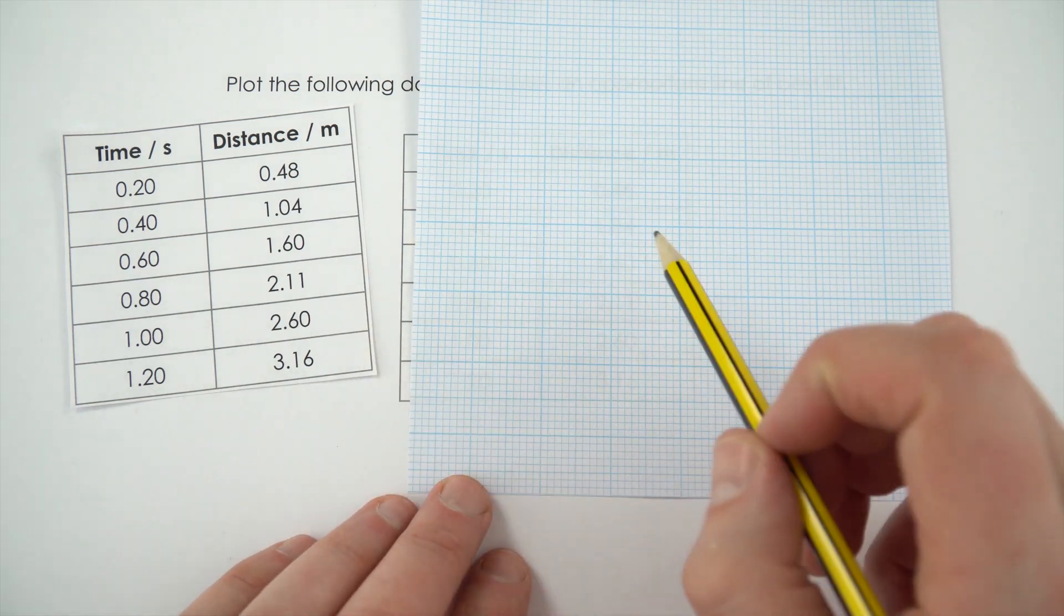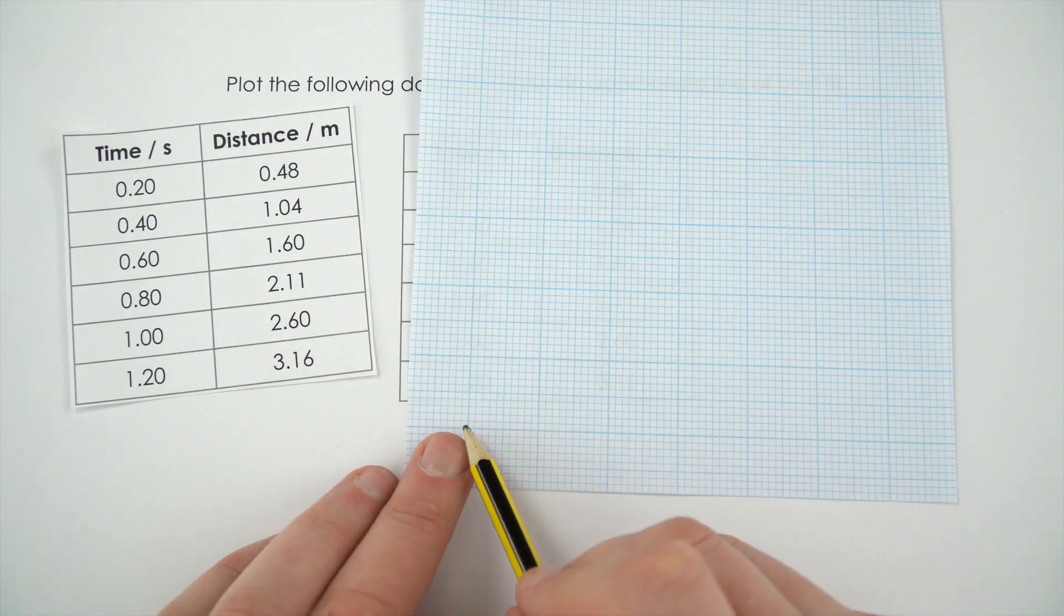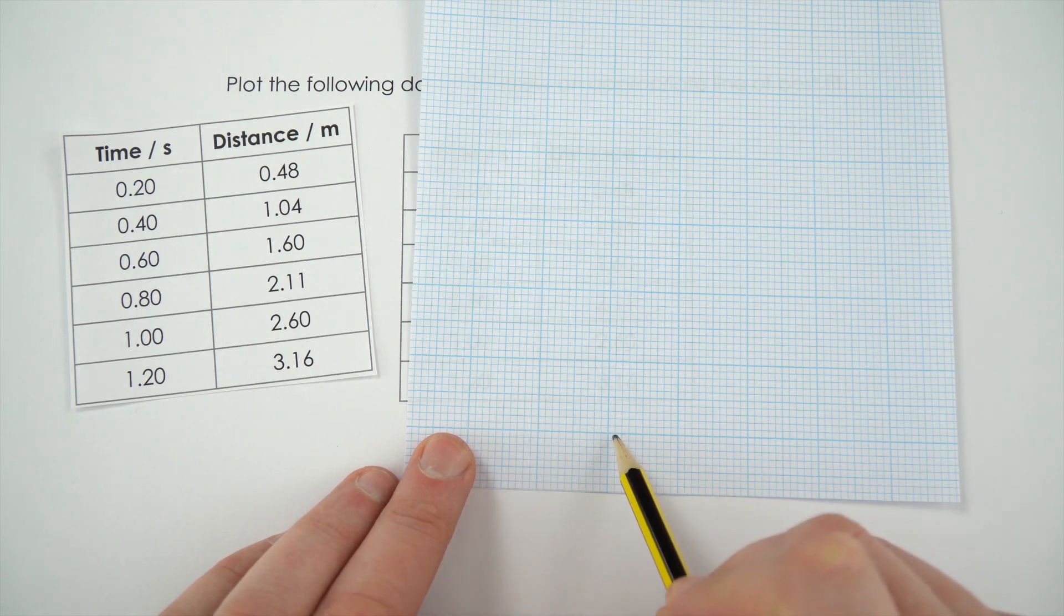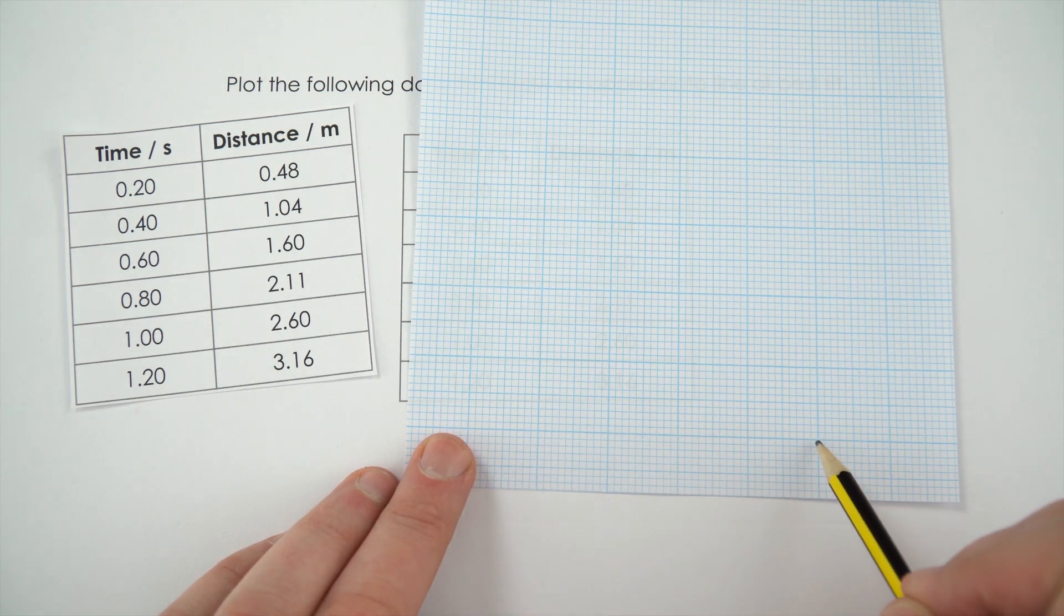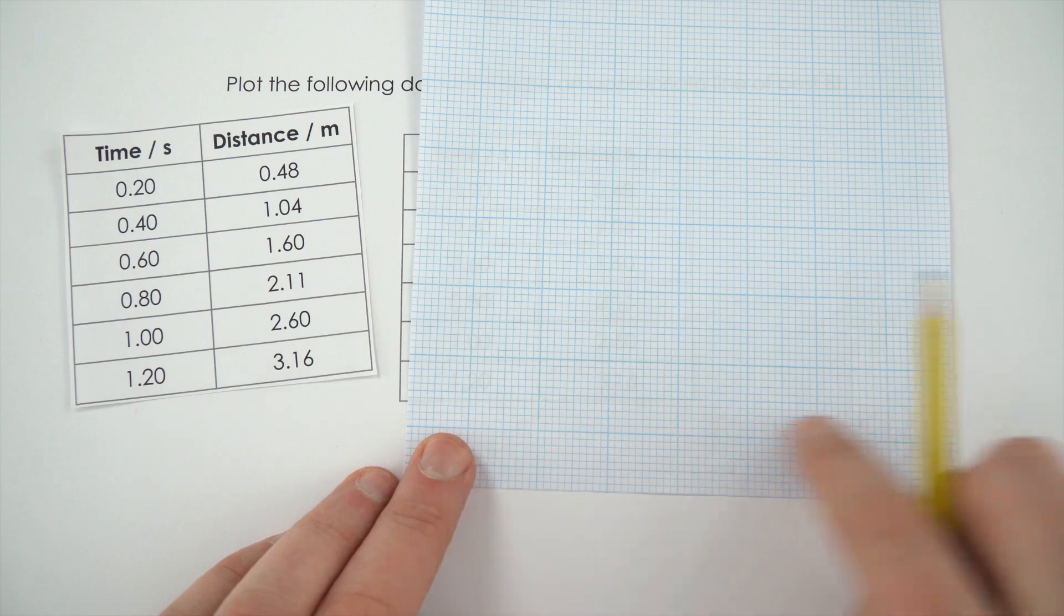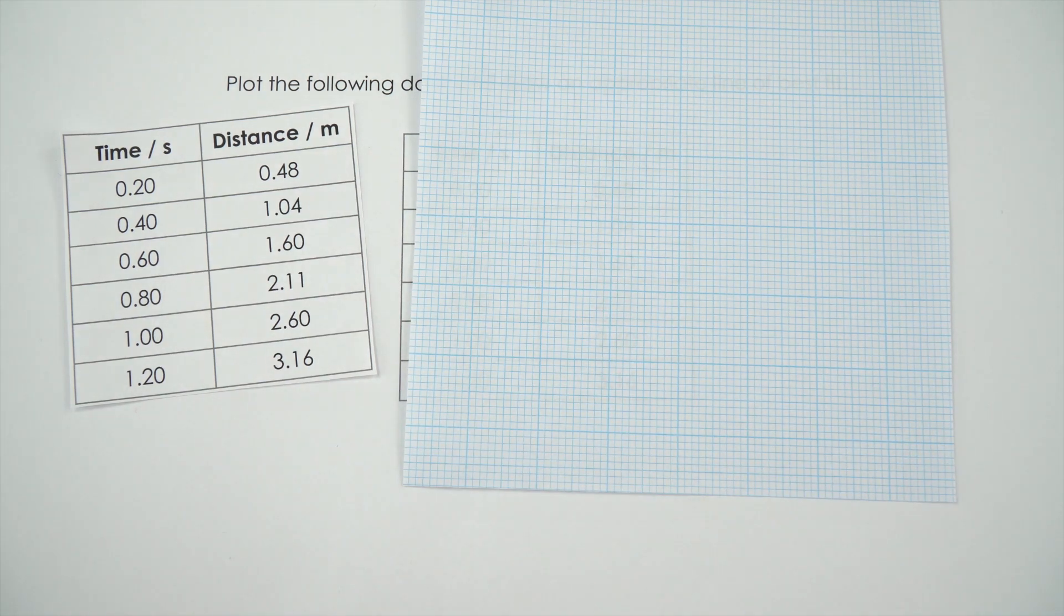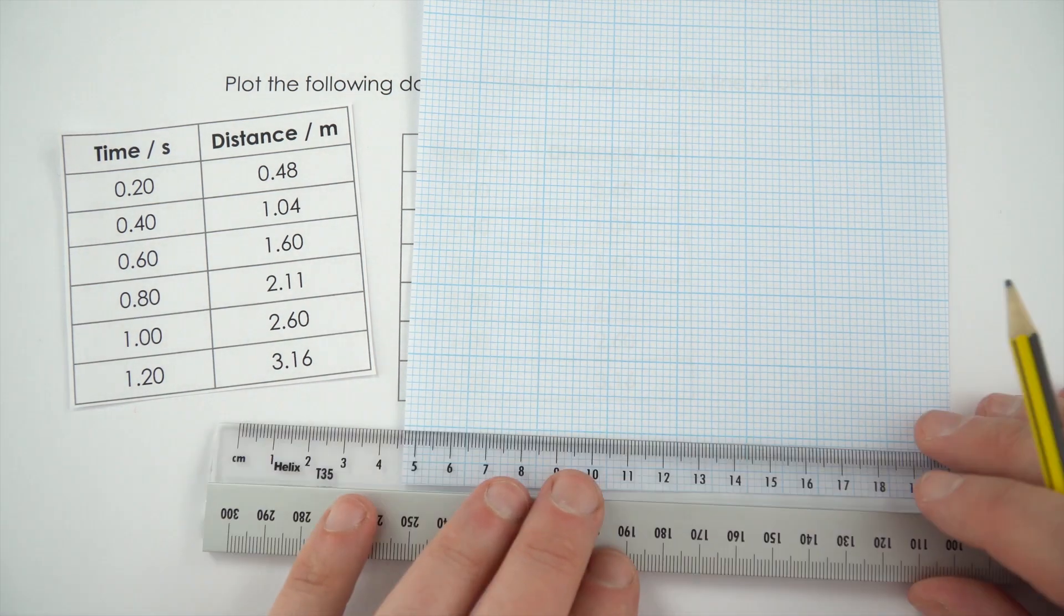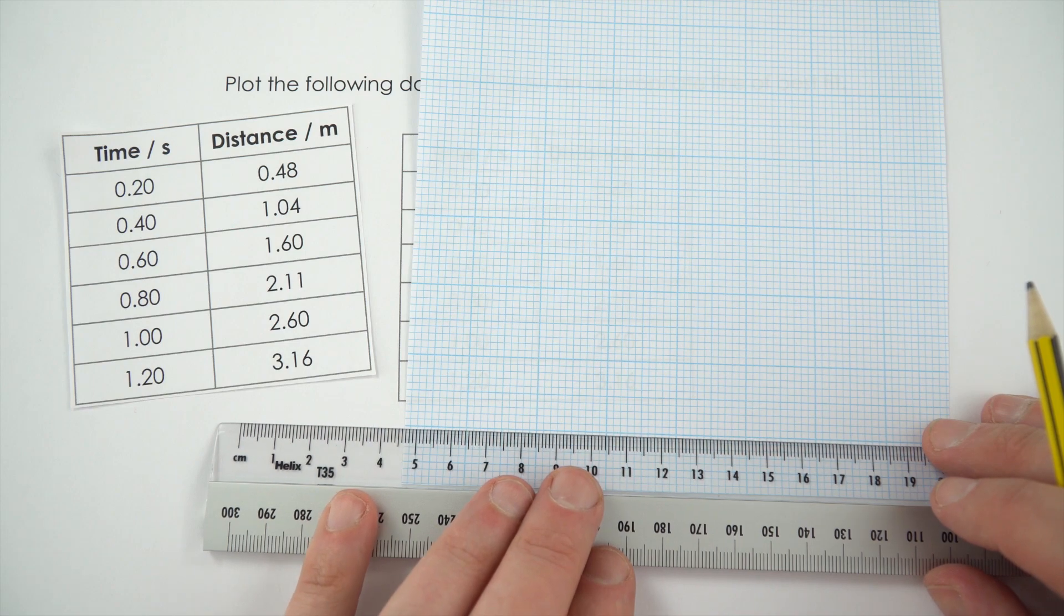Before I actually draw the line, I'm just going to work out how this fits in. So if I start at 0, if I went 0.2, 0.4, 0.6, 0.8, 1, and 1.2, I can fit all the data in. It's always worth, before you draw your first axis, just checking that your data can actually fit onto it.